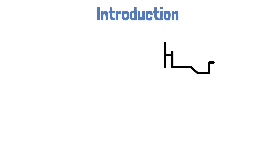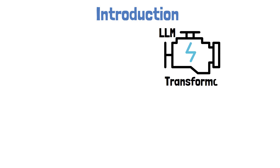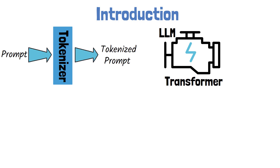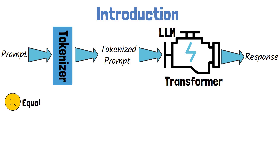There is no doubt that large language models nowadays are incredibly powerful, possessing extensive knowledge in almost any domain. At the core of these models lies the transformer architecture. However, to be able to process our prompts, large language models come with another component before the transformer called a tokenizer. The tokenizer converts the text into tokens which are part of the vocabulary of the large language model. Since the tokens are given by an external component, the model cannot decide whether to allocate more compute to a certain token, meaning that all tokens are treated the same.